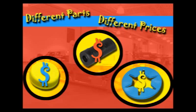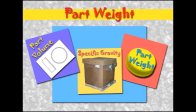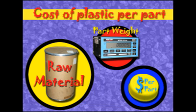All projects will be different, and therefore so will the prices. Let's go through an example. Using a blueprint or part drawing, the engineer will calculate the part volume. Then, by using the specific gravity of the specified plastic, they will determine the part weight. The cost per pound to purchase the raw material is applied to the part weight, and the cost of plastic per part is calculated.